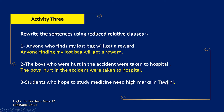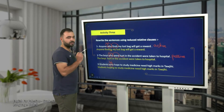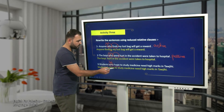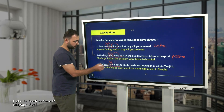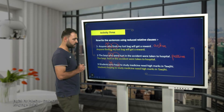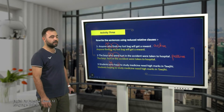Sentence number three: 'Students who hope to study medicine need high marks in tawjihi.' The answer is: 'Students hoping to study medicine need high marks in tawjihi.' We delete the relative pronoun and use the -ing form of the verb 'hope' — 'hoping.' Notice that if the verb ends with 'e', we omit it and add -ing at the end.